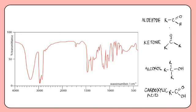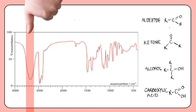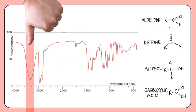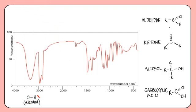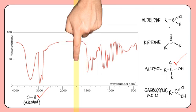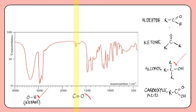With this one we can see it has a thumb peak in the correct position, confirming the presence of an alcohol OH group. There is no finger and so no carbonyl group is present. Therefore the compound is an alcohol.